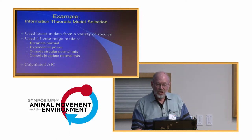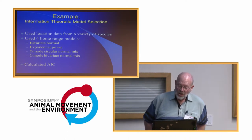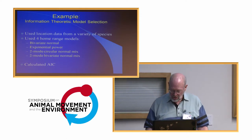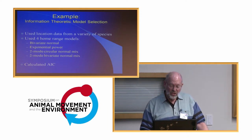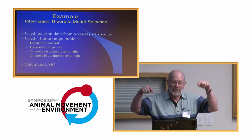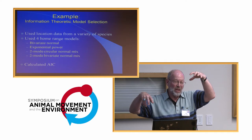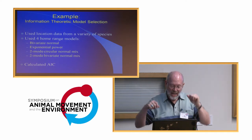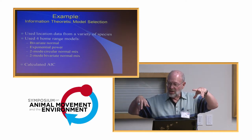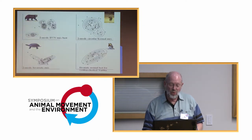That's a neat alternative to a bivariate normal — we call it the exponential power function. We used information theory to apply this to a variety of species. This is one of the papers published in Ecology. We used the bivariate normal and exponential power, and then added a two-mode circular normal mix and a two-mode bivariate normal mix, where you can estimate all those with maximum likelihood and calculate AIC for them.